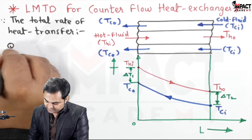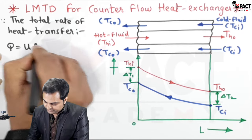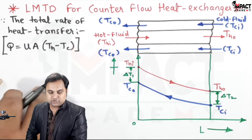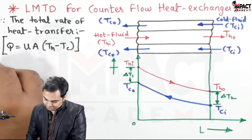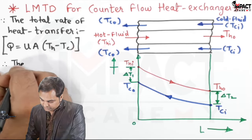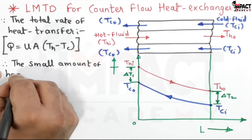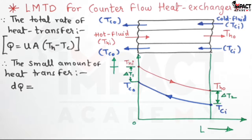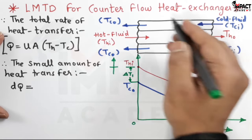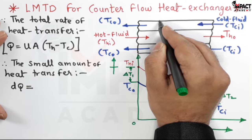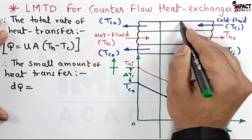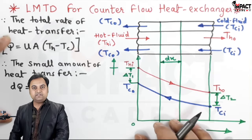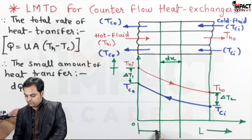The total rate of heat transfer Q is given by Q = U · A · (Th − Tc), where U is the overall heat transfer coefficient. The small amount of heat transfer will be denoted by dQ. In this heat exchanger of length L, I am assuming a small length element dx located at a distance x from the origin.